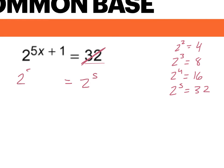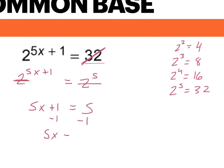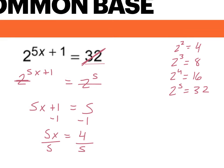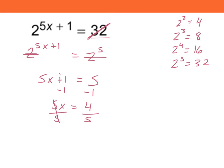So I'm going to set these equal to each other. We have 2 raised to the 5x plus 1 equal to 2 raised to the fifth power. Now that our bases are the same, we can just get rid of the bases and set the rest equal to each other. So we have 5x plus 1 is equal to 5. This is a simple equation that we can solve for x. We can subtract 1 on both sides, so we have 5x is equal to 4, and then we can divide by 5, so we get x is equal to 4 over 5.